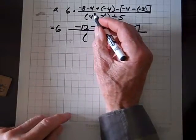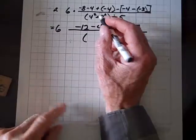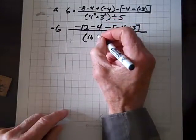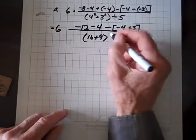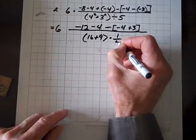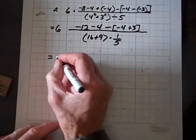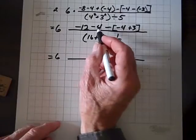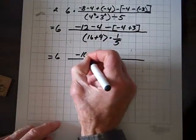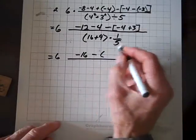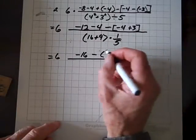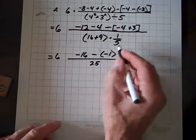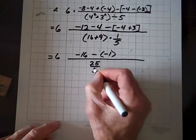Now let's go to the denominator. Four squared — exponents come before division or addition — so that's sixteen. Plus three squared is nine, divided by five. Well, that's going to be times one-fifth. So sixteen plus nine is twenty-five times one-fifth, which is the same as twenty-five divided by five.